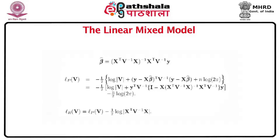To estimate the variance parameters in V, we can write the profile likelihood of V, which results in an expression on this slide. However, maximizing L_P(V) to get maximum likelihood estimates of the parameters in V is not necessarily a good idea and the resulting estimates can be biased. So we consider the restricted likelihood L_R(V) equal to L_P(V) minus half the log determinant of X′V⁻¹X. This leads to estimators called the restricted maximum likelihood estimates, or REML.